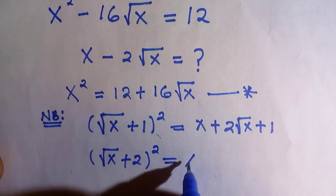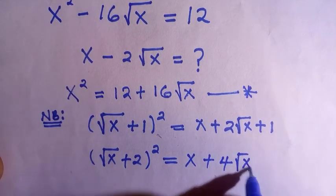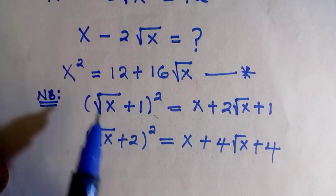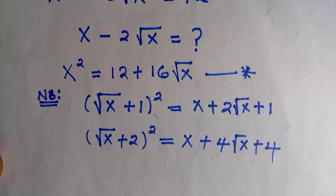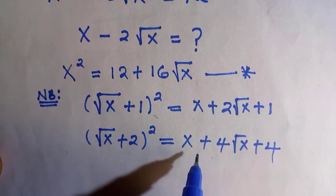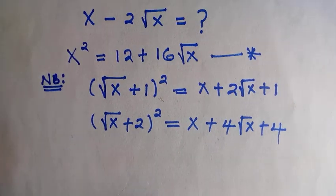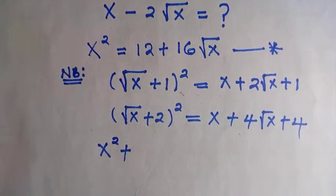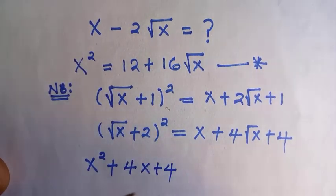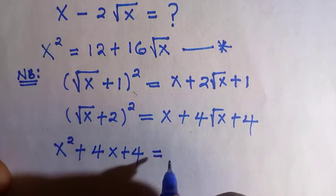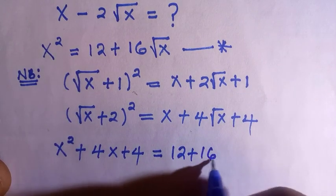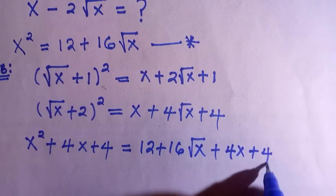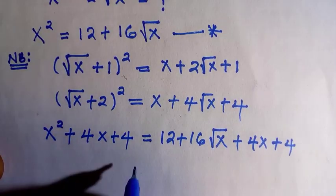...this equals x + 4√x + 4, and this second one is what I'm going to use. From the equation above, let's say I decided to add 4x + 4 to both sides. So we have x² plus 4x plus 4 equals 12 + 16√x + 4x + 4. The two sides have been balanced.